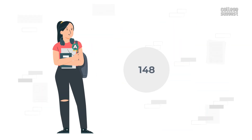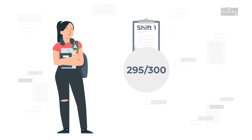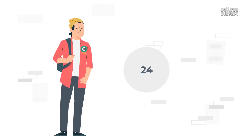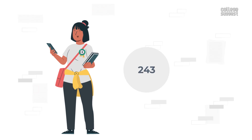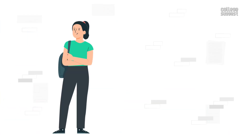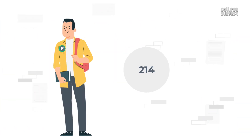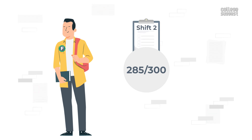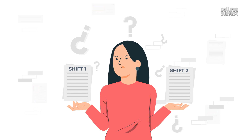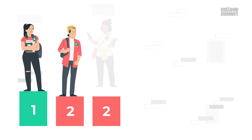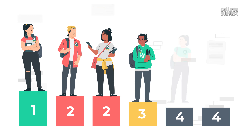Candidate A scored 295 out of 300 in shift one. Candidate B scored 290 out of 300 in shift two. Candidate C scored 292 out of 300 in shift one. Candidate D scored 292 out of 300 in shift one. Candidate E scored 285 out of 300 in shift one. Candidate F scored 285 out of 300 in shift two. So based on raw scores, rank 1 goes to candidate A, rank 2 to candidates C and D, rank 3 to candidate B, and rank 4 to candidates E and F.